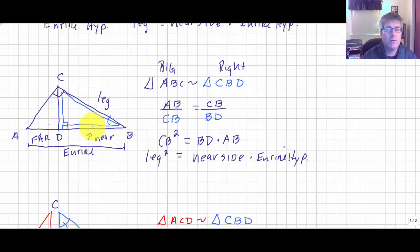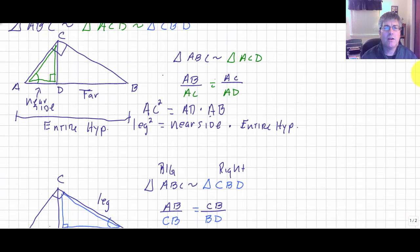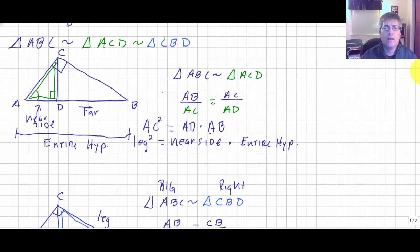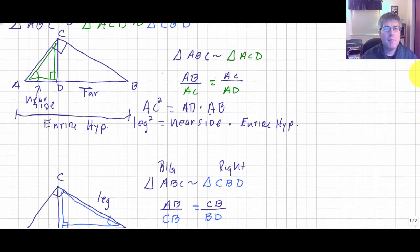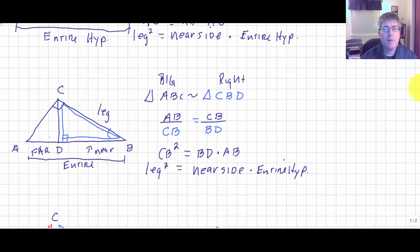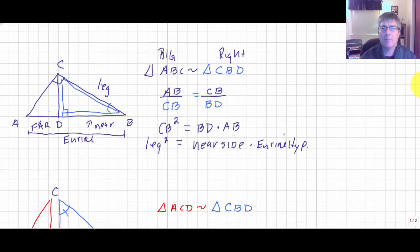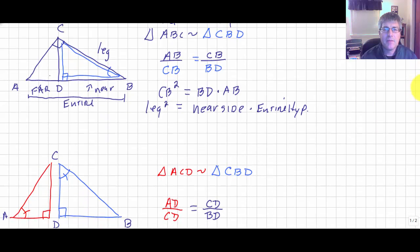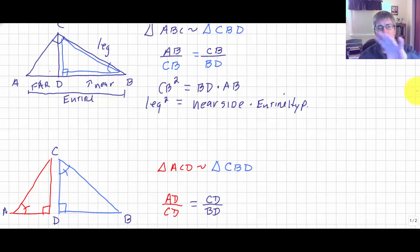That's the exact same concept as before — just different sides. The altitude on hypotenuse theorem states that leg squared equals near side times the entire hypotenuse, and this remains the same even if you rotate or shift your large right triangle.